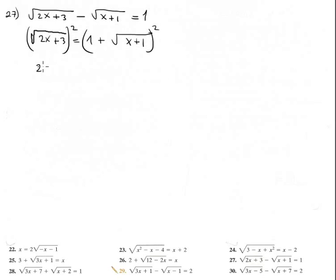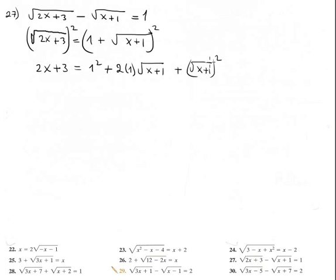Squaring gives 2x plus 3 equals 1 squared, plus 2 times 1 times the square root of x plus 1, plus the square root of x plus 1 squared. Since squaring eliminates the radical, this becomes 2x plus 3 equals 1 plus 2 times the square root of x plus 1, plus x plus 1.